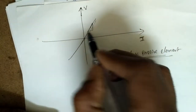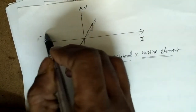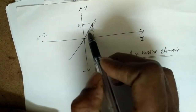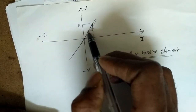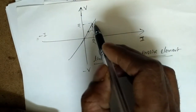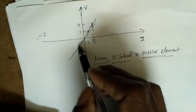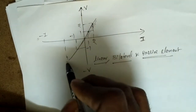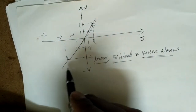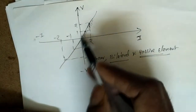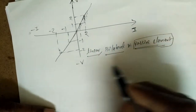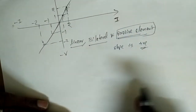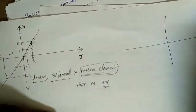To confirm it is passive, find the slope at each point. For example, at (2,2): slope = 1; at (−1,−1): slope = −1/−1 = 1; at (−2,−2): slope is still positive. Since the slope is positive in all directions, the element is passive.